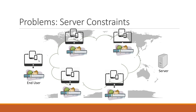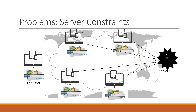The third problem is server constraints. There are various users across the globe trying to hit the same server for content. If everyone hits the server simultaneously, the server can be overwhelmed and unable to respond. Servers have their own constraints like RAM, number of concurrent connections, or the internet pipe bandwidth. If more users than the server can handle try to download content simultaneously, it won't survive.